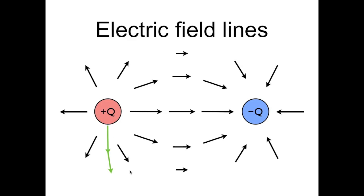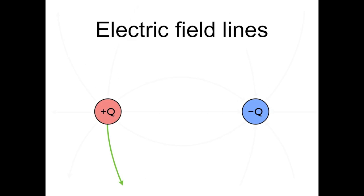We can keep doing this, and the resulting line is an approximation for the electric field line. Now here's the true electric field line for this case, and now we can draw in some more electric field lines.